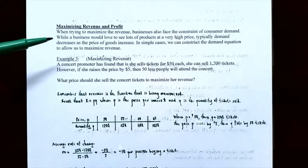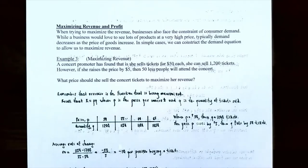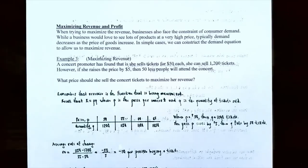Whenever we're trying to maximize the revenue, businesses are also faced with the constraint of consumer demand. So while the business would love to see lots of products sold at a very high price, typically demand decreases as the price of goods increase. In very simple cases, we can actually construct the demand equation and find out what is the maximum revenue possible. If you increase prices indefinitely, eventually the demand will go down, and so will your revenue and your profits.